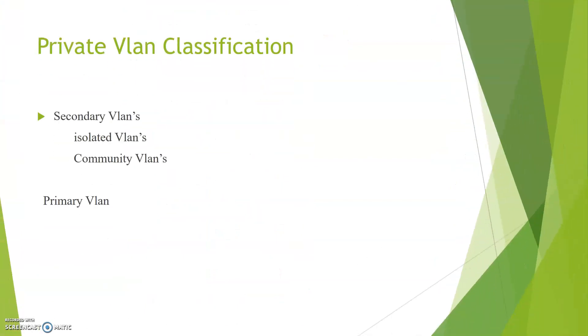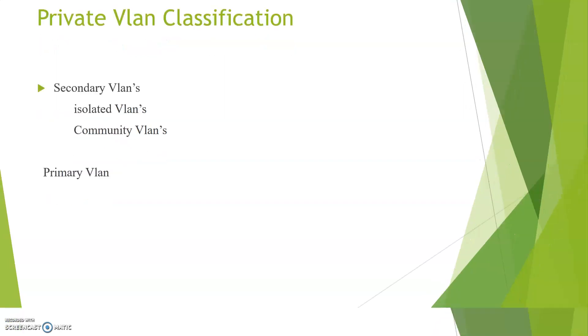Private VLANs are classified as primary VLAN and secondary VLAN. Secondary VLANs are further classified as isolated and community VLAN. Now let us discuss each one.